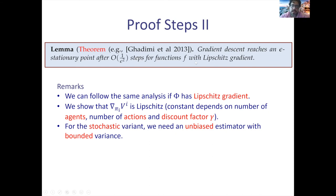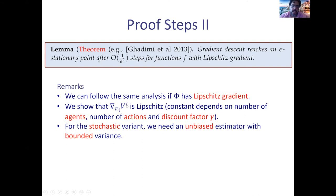We can follow the same analysis but need to show the key technical lemma that φ has a Lipschitz gradient. But we don't even know φ — how can we show it has a Lipschitz gradient? Well, this is equivalent to showing that the gradient of Vᵢ is Lipschitz. So instead of showing that φ has a Lipschitz gradient, you just need to show the gradient of each agent's value function Vᵢ is Lipschitz. The Lipschitz constant depends on the number of agents, number of actions, and the discount factor γ.